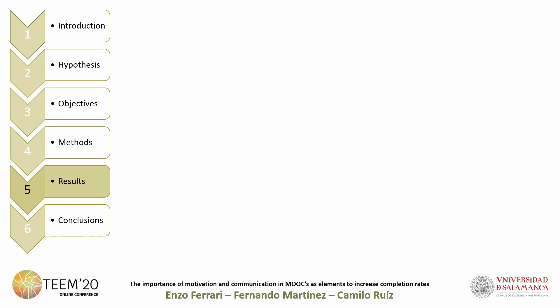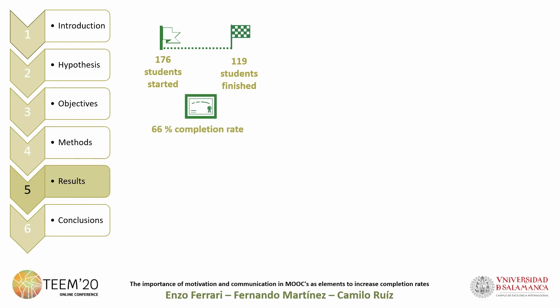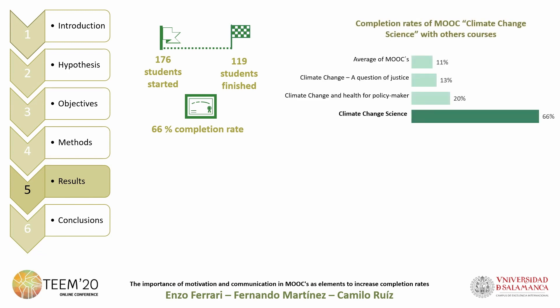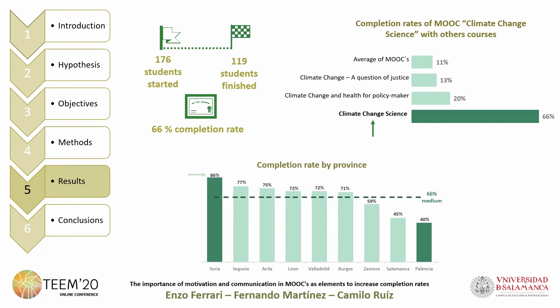From the 176 participants enrolled, 119 finished the course, obtaining a completion rate of around 56 percent — a better result than other similar MOOCs with a similar topic. The results analyzed by province indicate that Soria obtained the best completion rate in Castilla and León. However, the province with the lowest completion rate was Palencia with 40 percent.